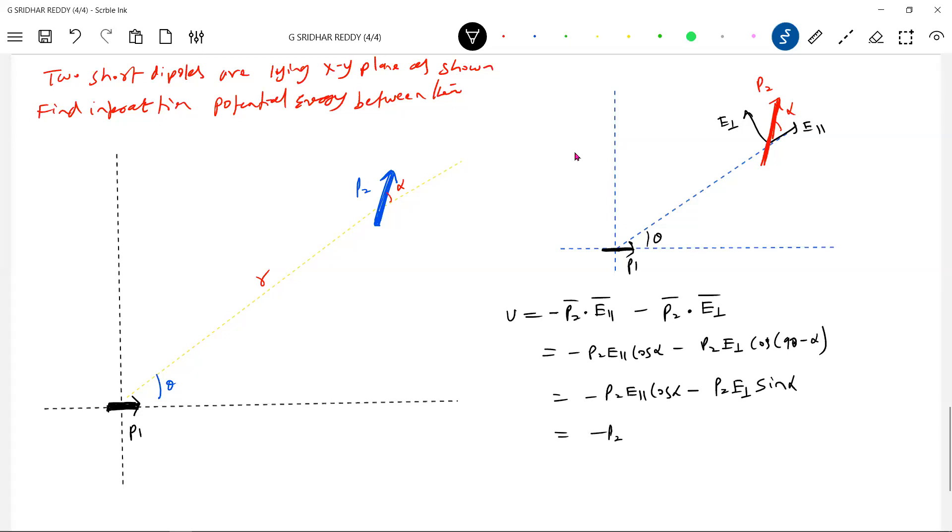Do we know what E parallel is? E_parallel = 2P1cosθ / (4πε₀R³) times cosα. And E_perpendicular is P1sinθ / (4πε₀R³) times sinα. This is the total interaction potential. Let me simplify the steps.